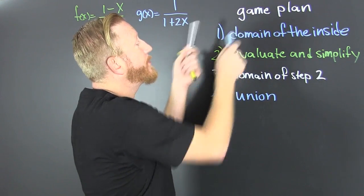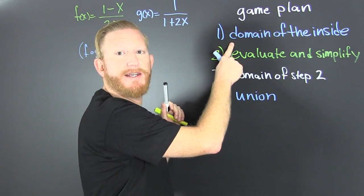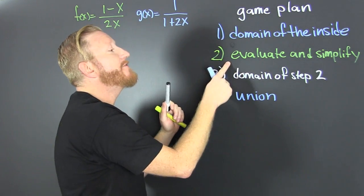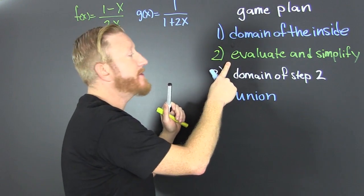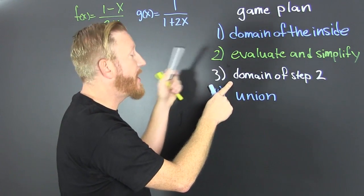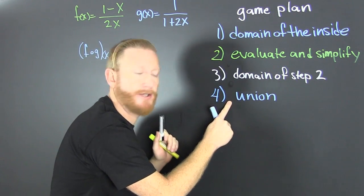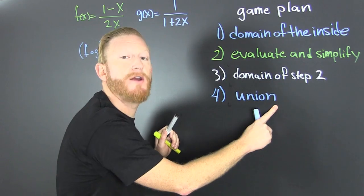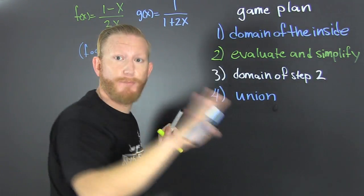A game plan. We find the domain of the inside. Then we evaluate and simplify. Then we find the domain of step two, after we simplify. Then we union, or onion, sound it out, we onion up the two intervals and put them together.